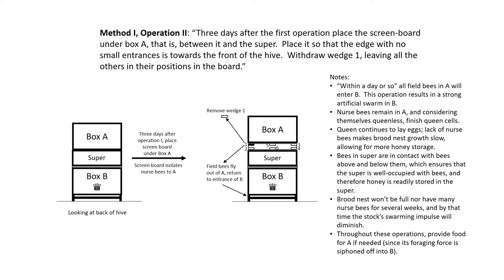This is the fourth day. By placing the screen board under box A, this operation accomplishes two things. It further isolates the nurse bees from the queen and traps field bees in A. But by removing wedge one, field bees can escape box A and enter box B through the bottom opening, which is the opening they are accustomed to. In other words, field bees are bled or siphoned from box A to box B. In future operations, this siphoning will continue as new field bees develop in box A.